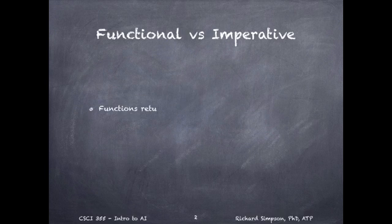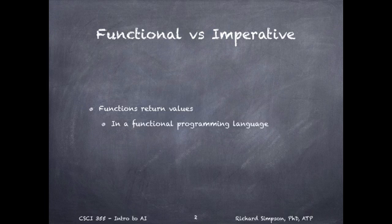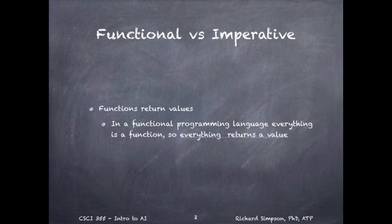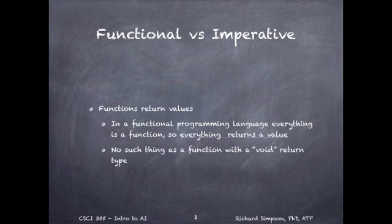Start by understanding that a function is something that returns a value. In a programming language like Java, we can have subroutines with a return type of void that doesn't return anything. In a functional programming language, everything is a function, so everything returns a value. In functional programming, there is no such thing as a function with a void return type.